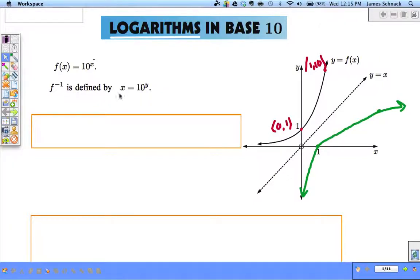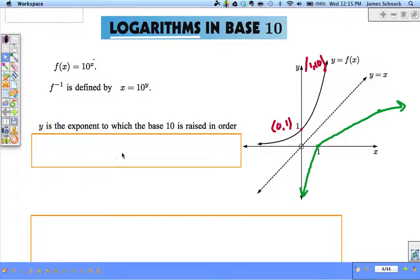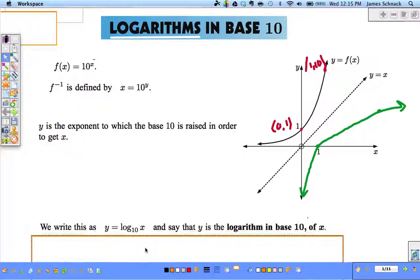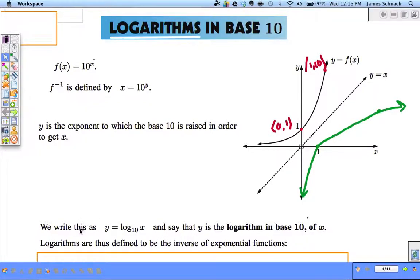So remember the way we find inverses, we interchange the x and the y. So f inverse would be defined by x equals 10 to the y. In other words, y is the exponent to which the base 10 is raised in order to get x. We write this as y equals log base 10 of x. Log is short for logarithm. The base 10 is like this base 10. And this logarithm finds us the exponent of 10 that gives us x. Logarithms are defined to be the inverse of this exponential function.